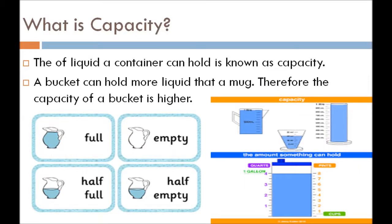What is capacity? Capacity kya hoti hai? The liquid a container can hold is known as capacity. A bucket can hold more liquid than a mug. Therefore, the capacity of a bucket is higher — kyonki bucket zyada amount mein liquid ko hold kar sakti hai. Aur ek mug mein kam liquid hold kar sakte hain. Toh capacity kiski zyada hui? Bucket ki.